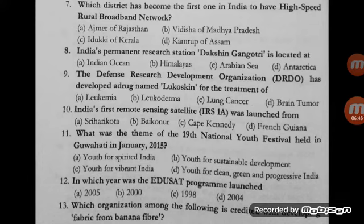Question number 10: India's first remote sensing satellite, IRS-1A, was launched from — Sriharikota, Baikonur, Cape Kennedy, or French Guiana? The correct option is B, Baikonur Cosmodrome, situated in Russia. It was launched on March 17, 1988.